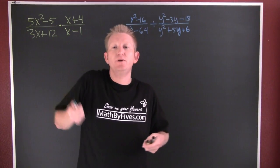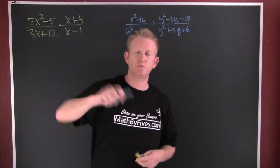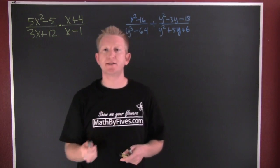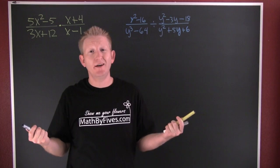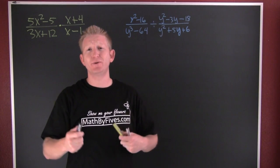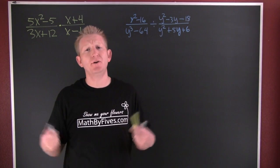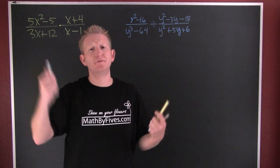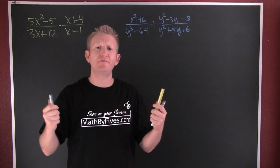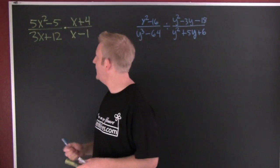How do we multiply and divide these rational expressions? I think it's best to go about it with a few examples. We need to remember: when in doubt, factor. Factor first.